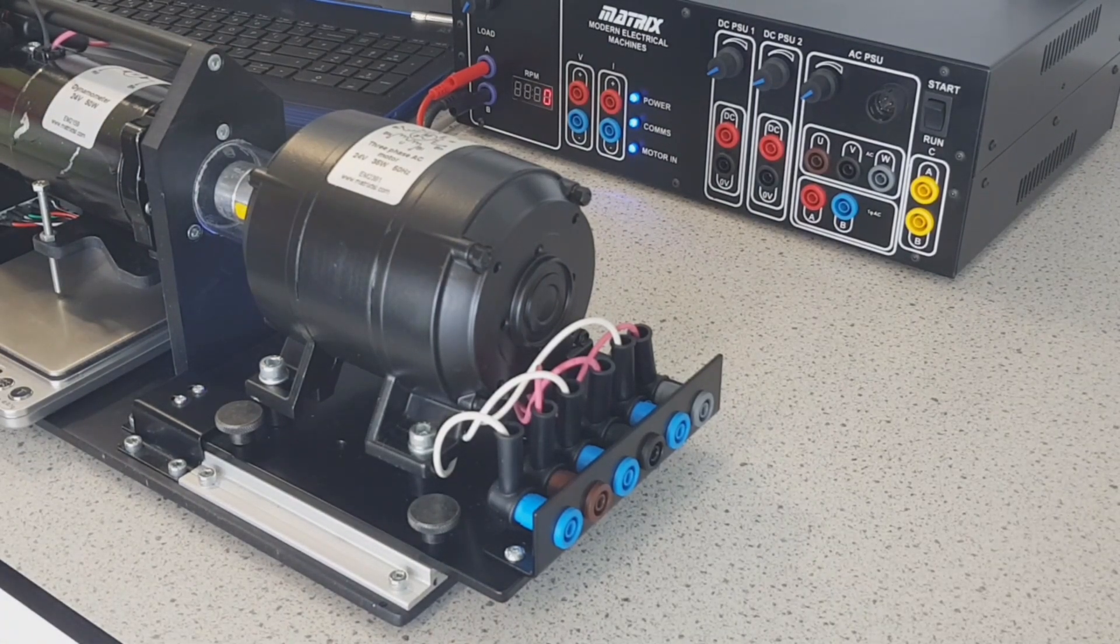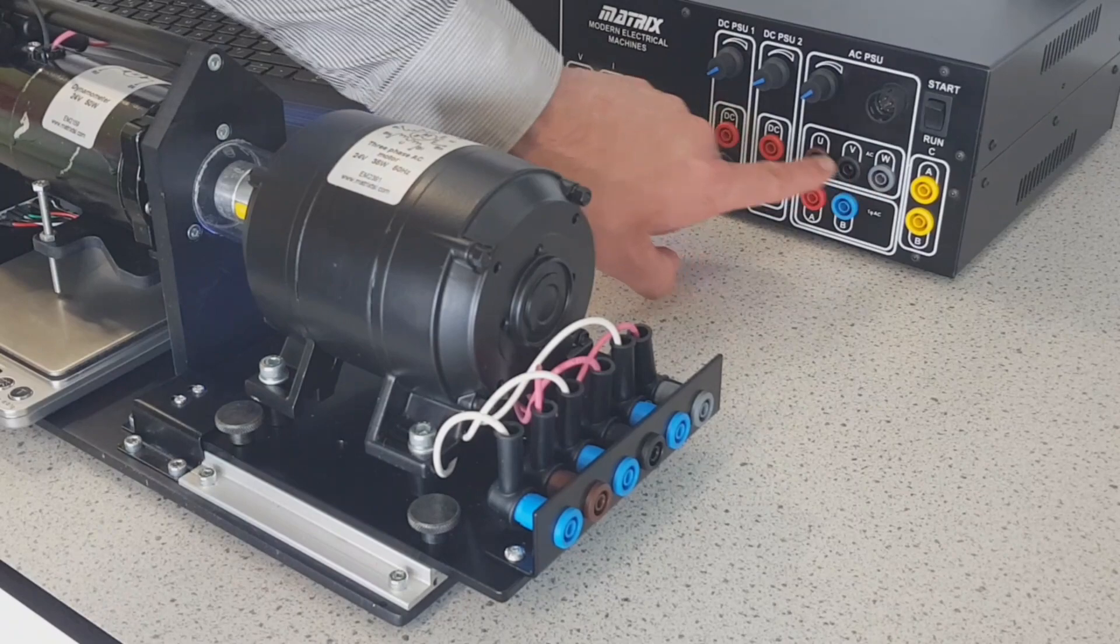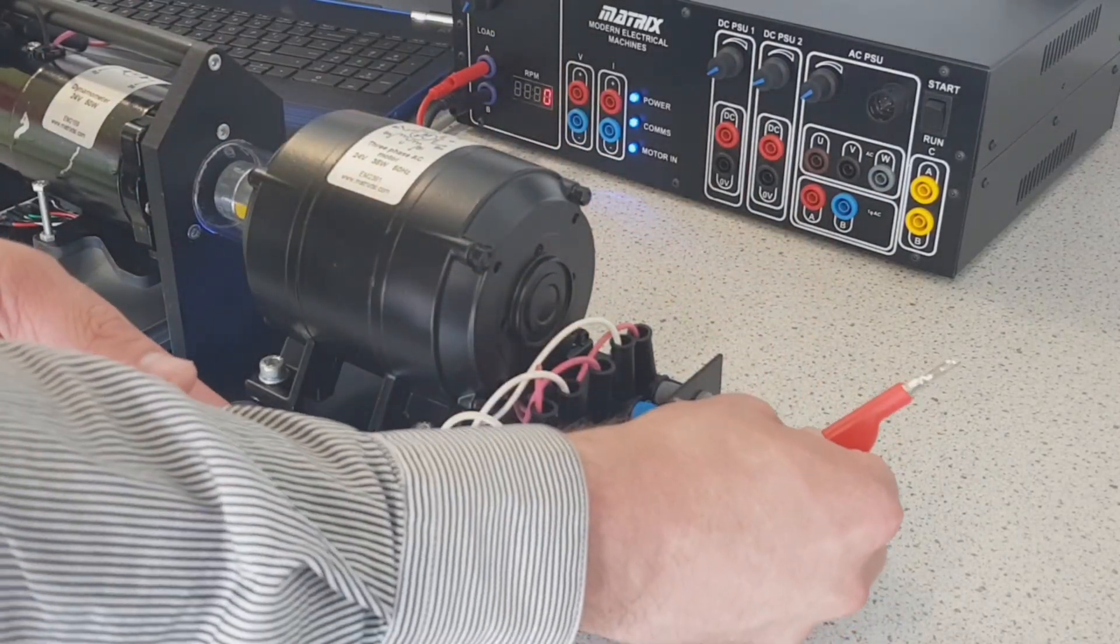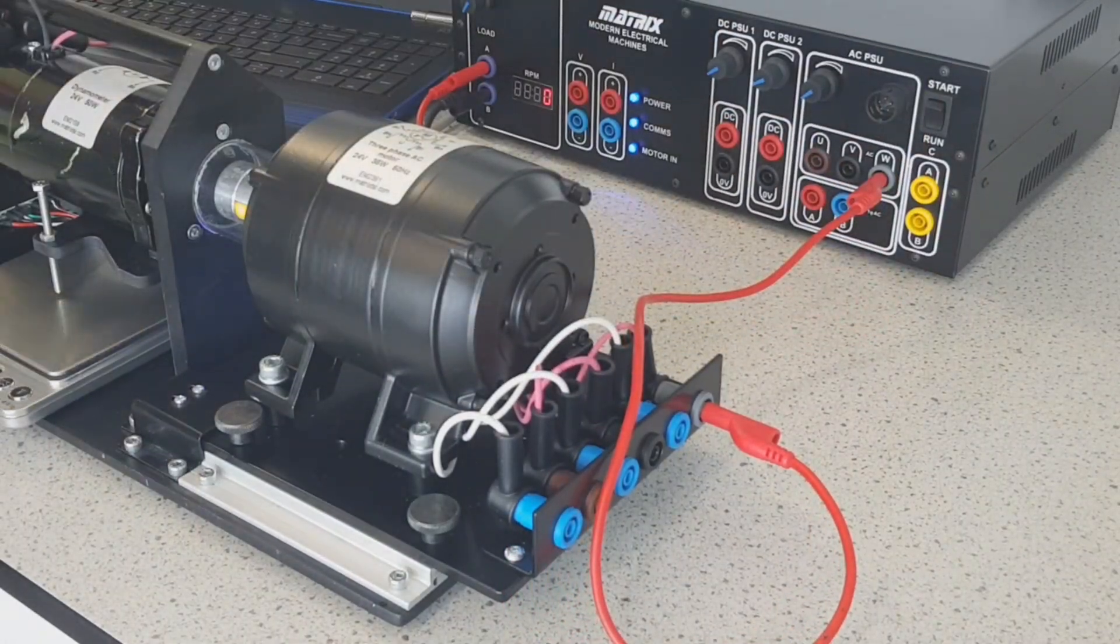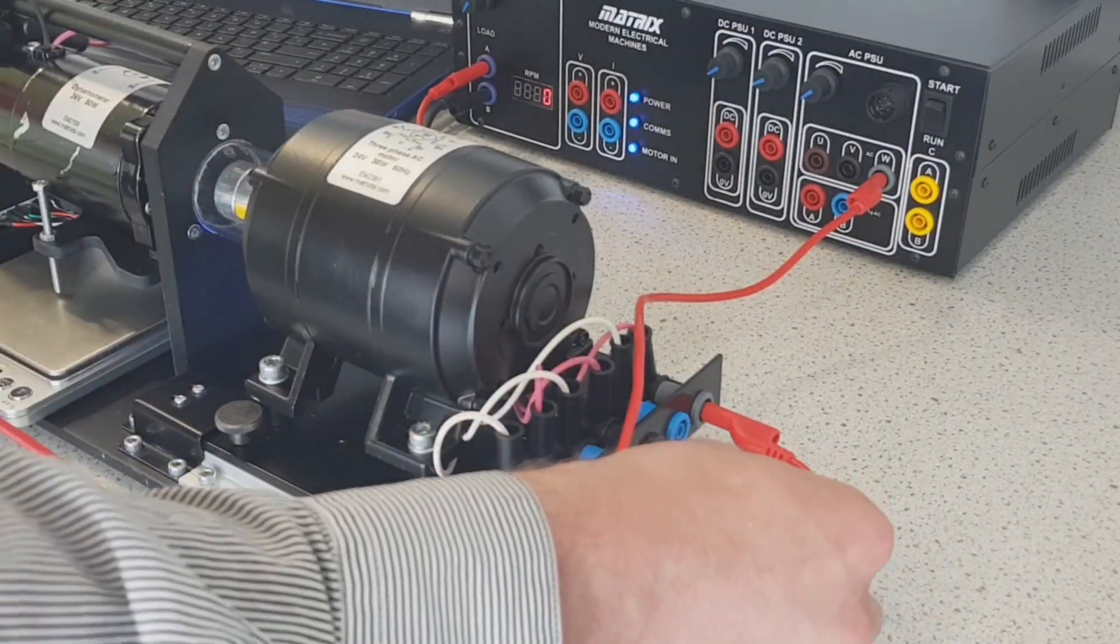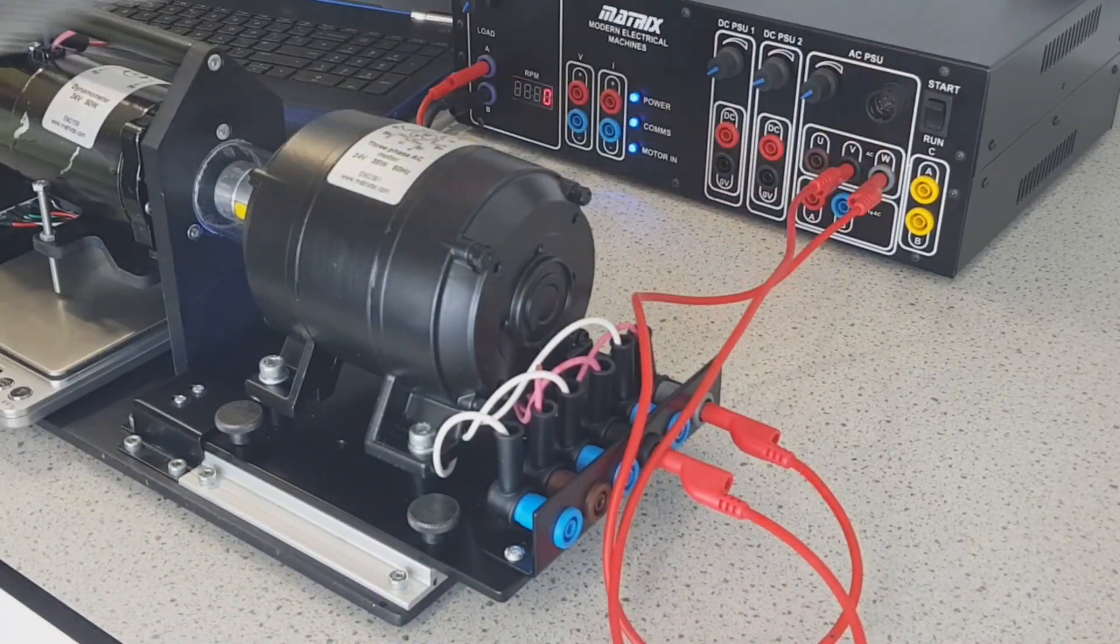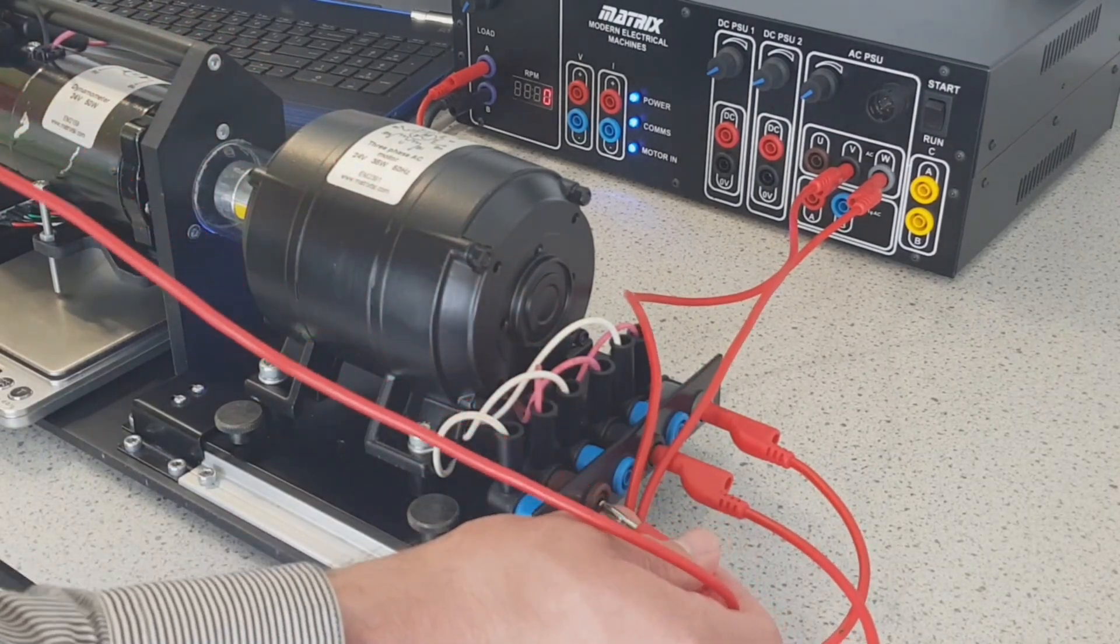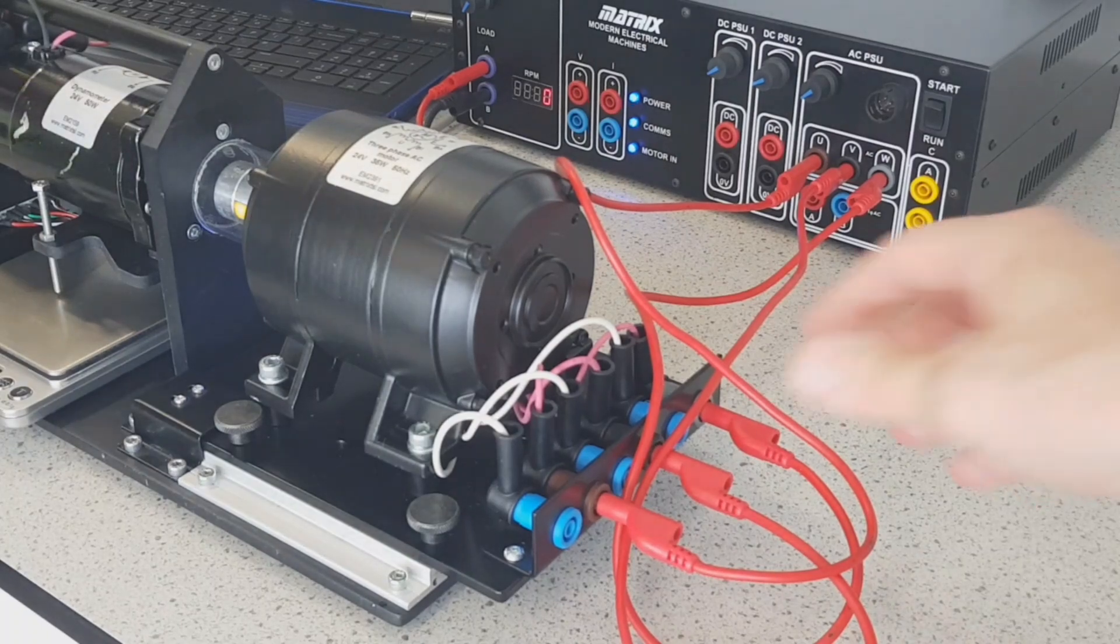So could you show us now how to connect up the three phase AC motor into our control box? So here you've got the three phases. You've got grey here, naturally grey to grey. Black to black. Brown to brown. And this is going to be a star.